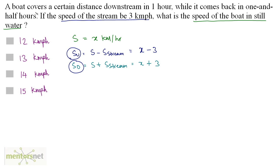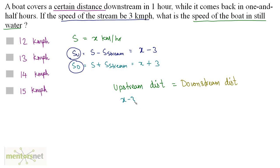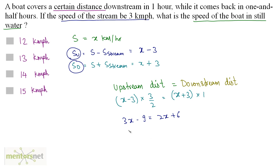The boat covers the same distance upstream and downstream, so upstream distance equals downstream distance. Upstream distance equals upstream speed times time: (x minus 3) times 3/2. This equals downstream distance: (x plus 3) times 1. Expanding gives 3x minus 9 equals 2x plus 6, so x equals 15.